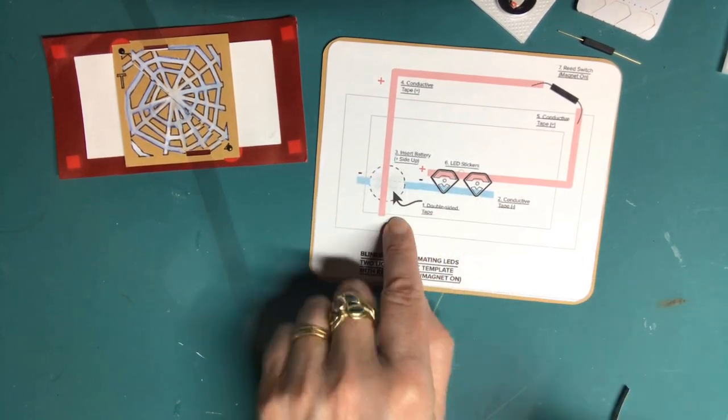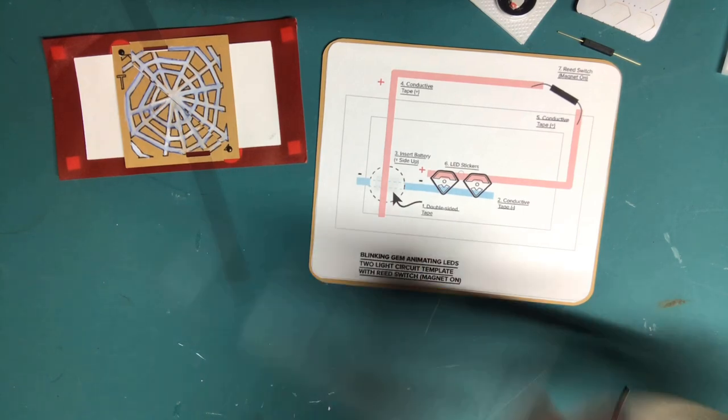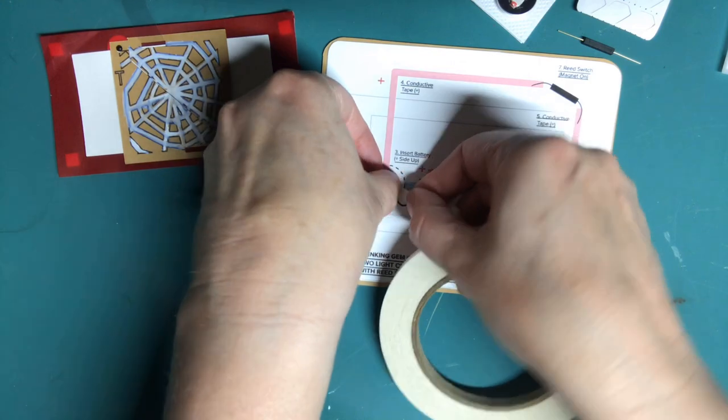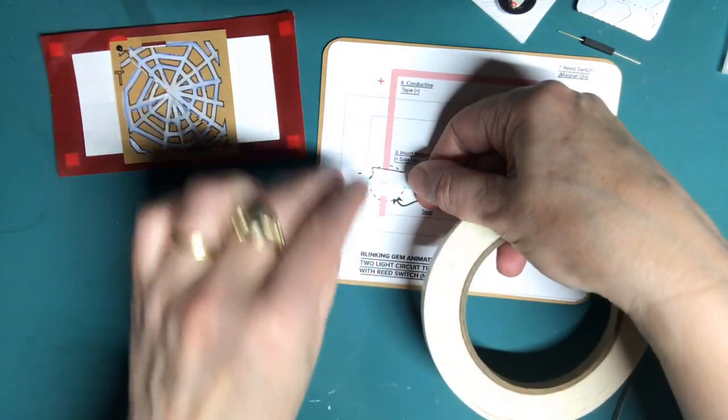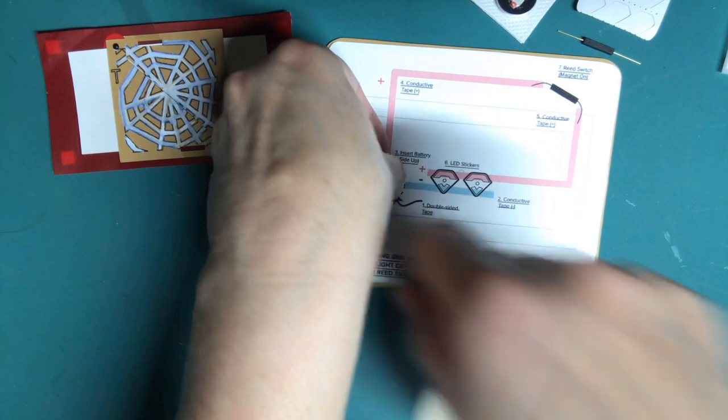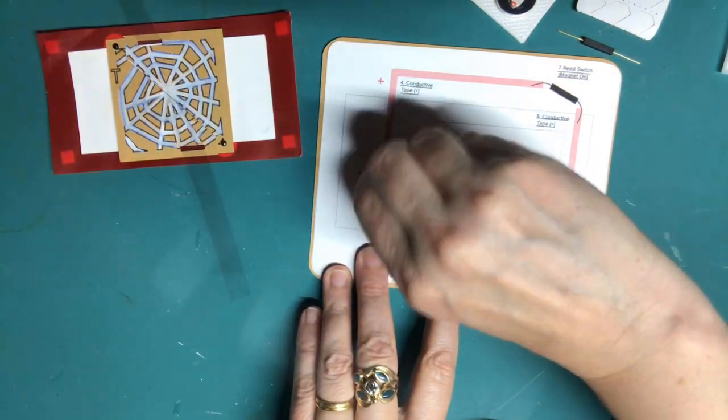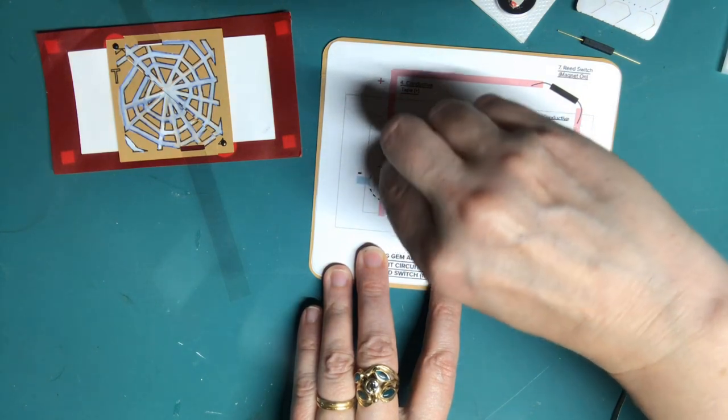The first step of building your circuit is to add double-sided tape over the round battery footprint and remove the protective backing. This tape will be doing double-duty: holding your battery in place and connecting the negative side to the negative lead to help increase the physical and electrical connection.